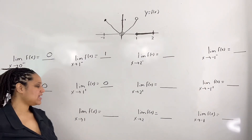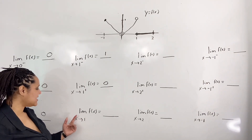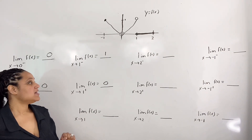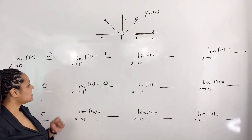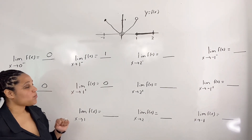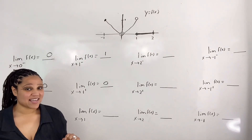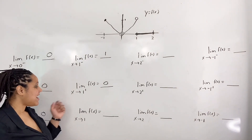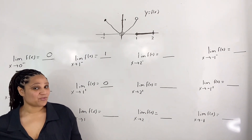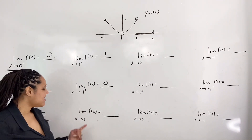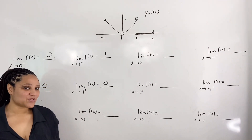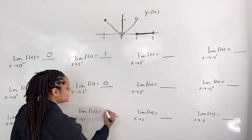Next we evaluate the limit as x approaches 1. Since the limit as x approaches 1 from the left does not equal the limit as x approaches 1 from the right, then the limit as x approaches 1 does not exist.